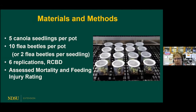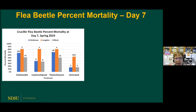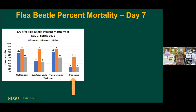We tested them in the greenhouse — put the flea beetles in the pots and assessed mortality and feeding injury rating. Here are some results on percent mortality. The different sites are color coded: Dickinson is blue, Langdon is orange, Minot is gray. The untreated check is always on the right side of the graph. We got fairly good control or percent mortality with the clothianidin and thiamethoxam. The cyantraniliprole was a little bit slower in expressing mortality, but at day seven we did start to see some activity. All the insecticide seed treatments provided significantly higher percent mortality than the untreated check.